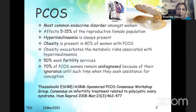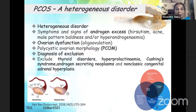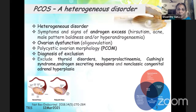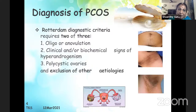PCOS is a heterogeneous disorder with symptoms and signs of androgen excess, ovarian dysfunction, and polycystic ovarian morphology. Androgen excess can be clinical hyperandrogenism — in the form of hirsutism, acne, male pattern baldness — or biochemical hyperandrogenemia. It is essentially a diagnosis of exclusion, as many disorders mimic PCOS. It is important to exclude thyroid disorders, hyperprolactinemia, Cushing's syndrome, androgen-secreting neoplasms, and non-classic congenital adrenal hyperplasia.